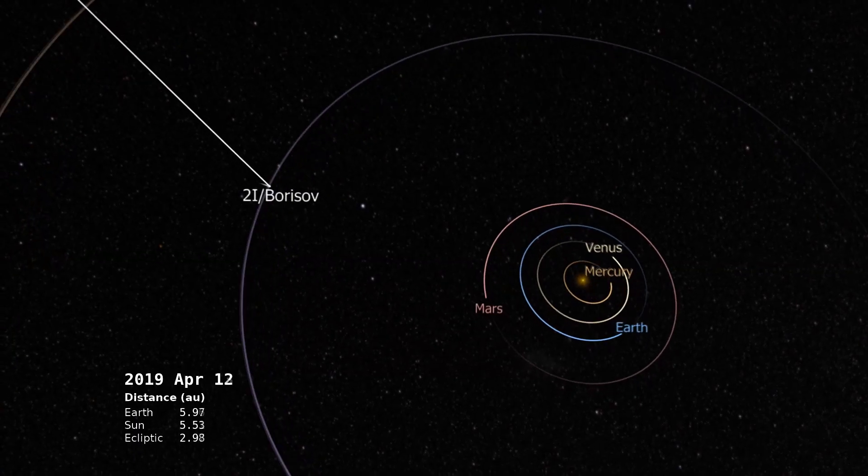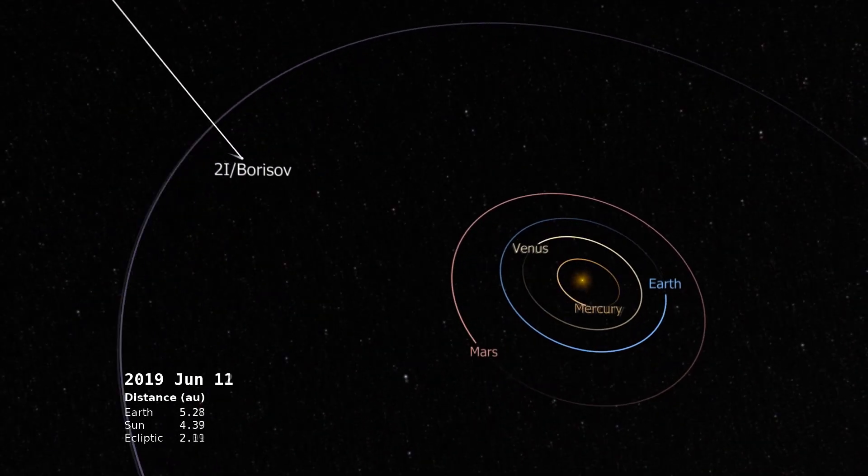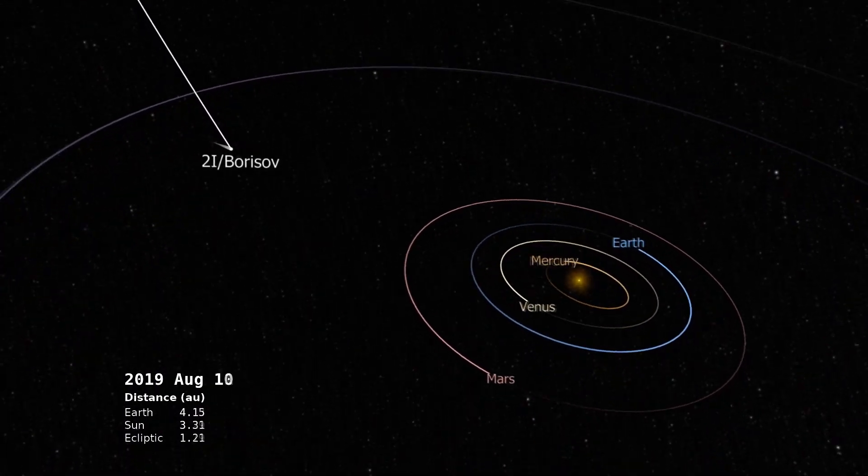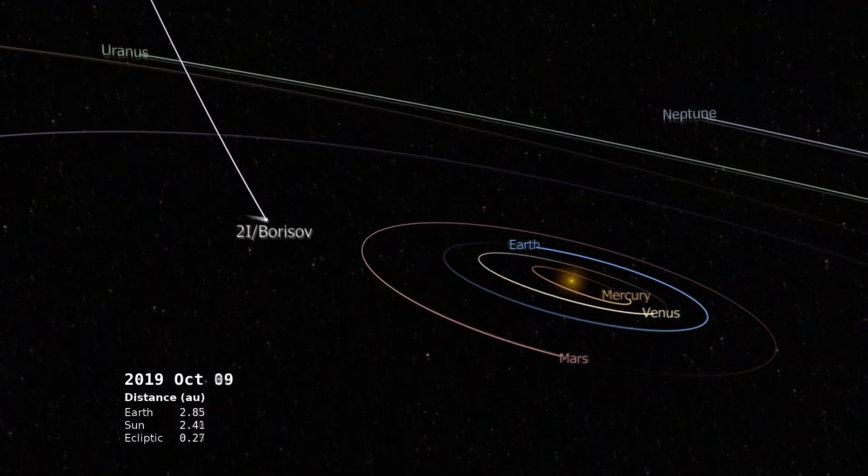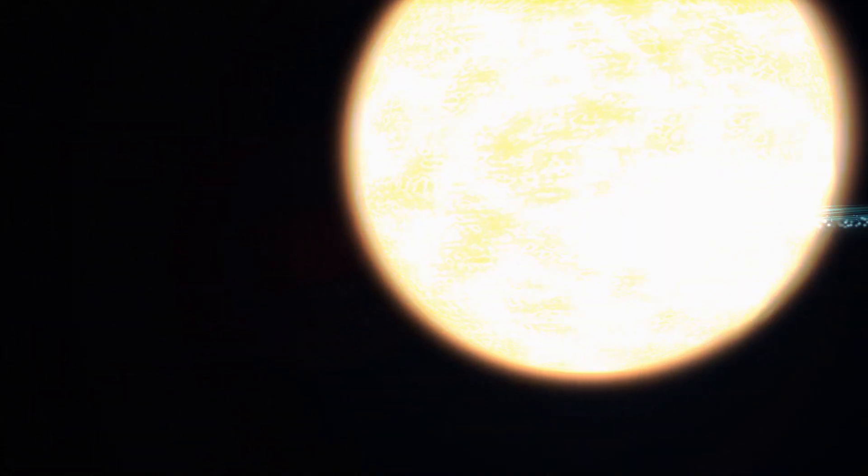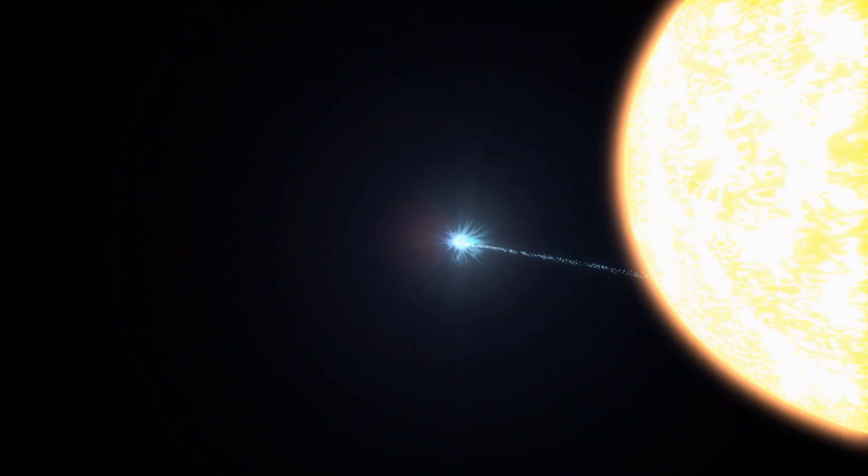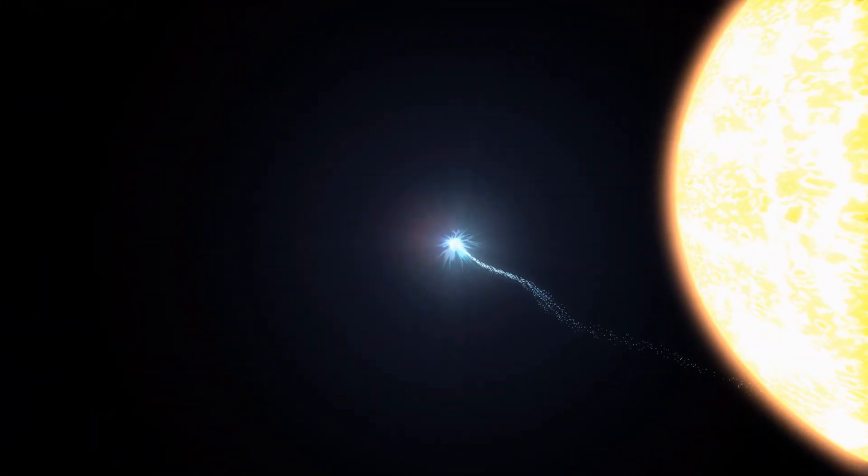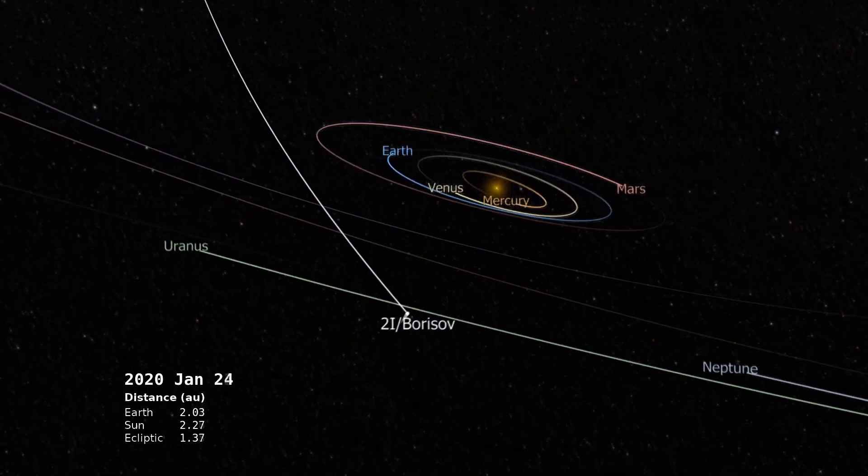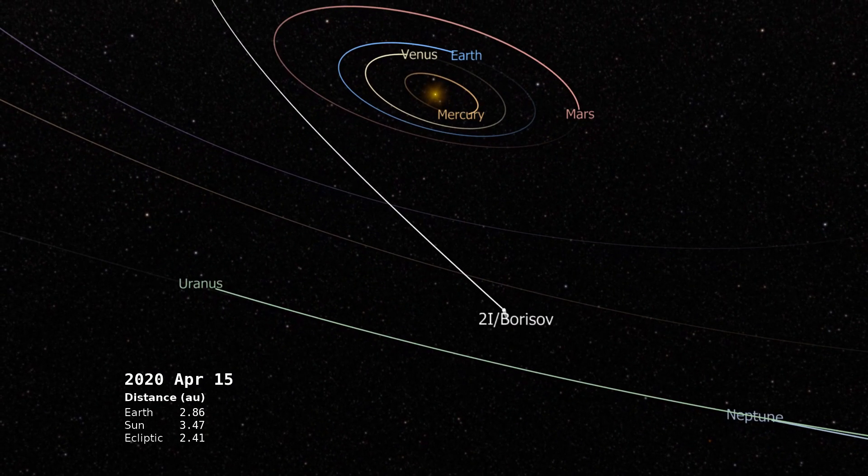2i Borisov got no closer to us than Mars' orbit, and that nearest approach was still over one light-second away. Unlike the earlier asteroid-like visitor, Oumuamua, 2i Borisov is an icy body and produced a tail whose length was 14 times the size of Earth.